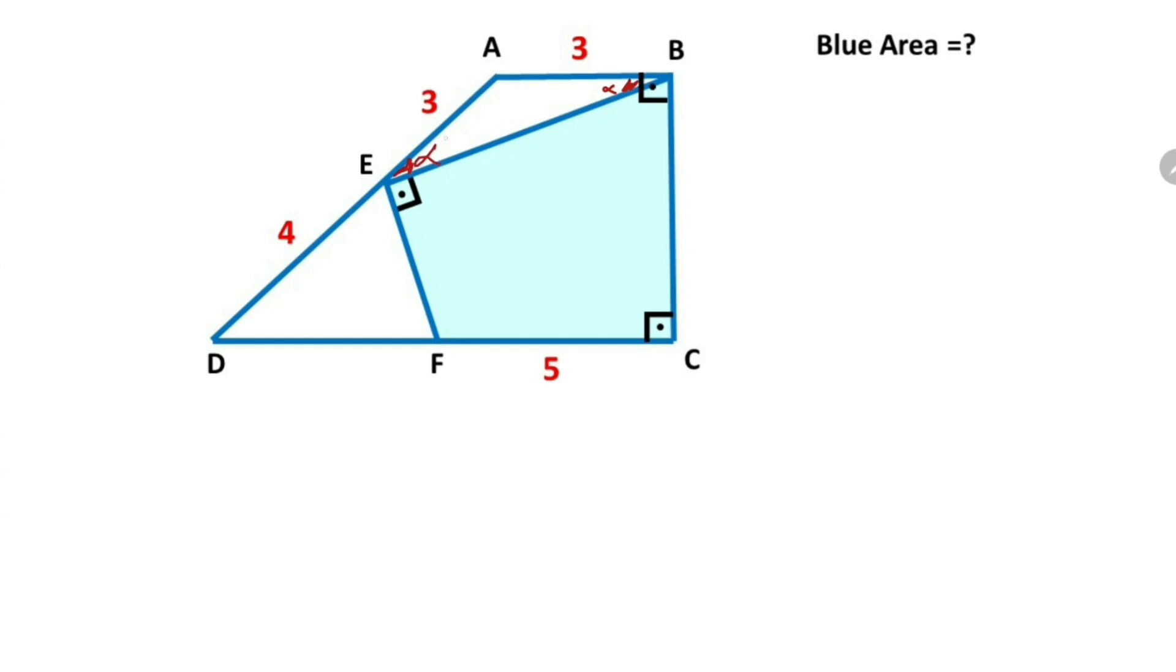This angle must be alpha because this triangle is an isosceles triangle. Here, this angle must be 180 minus 2 alpha. We know that these two sides are parallel, so here must be 180 minus alpha, and then this angle must be 90 minus alpha. That means 90 minus alpha is left here, so here must be 4 units.